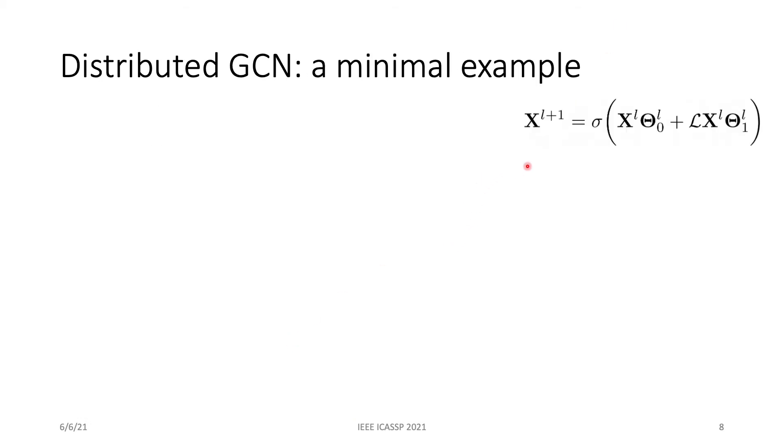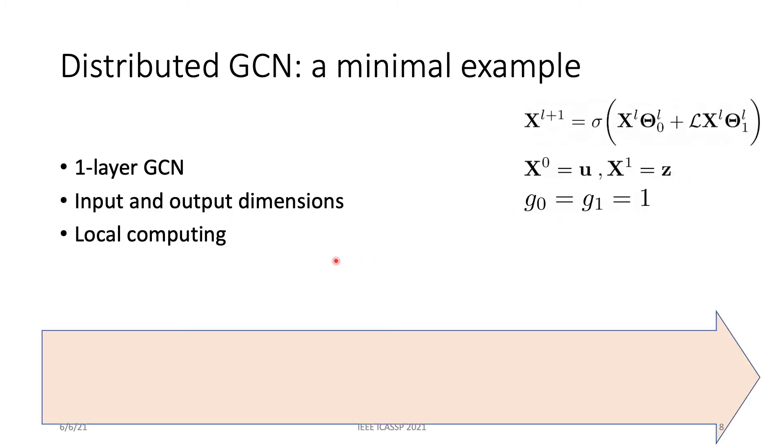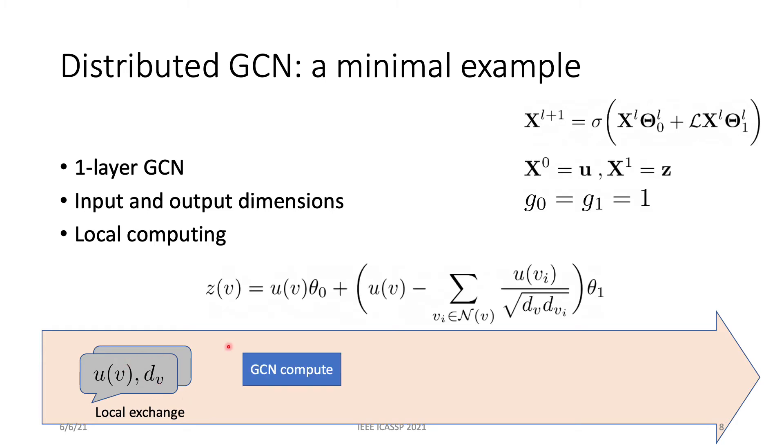Let's look at how the GCN is implemented in a distributed manner. Given a minimal example of one-layer GCN with the input of U and output Z, and they are all one-dimensional, the local computing at a single node is as follows. First, the node will exchange utility and degree with its neighbors. Then, with those information collected from the neighborhood, the node will compute its node embedding Z with this equation. And notice that this equation has a computational complexity that's proportional to the size of the neighborhood.